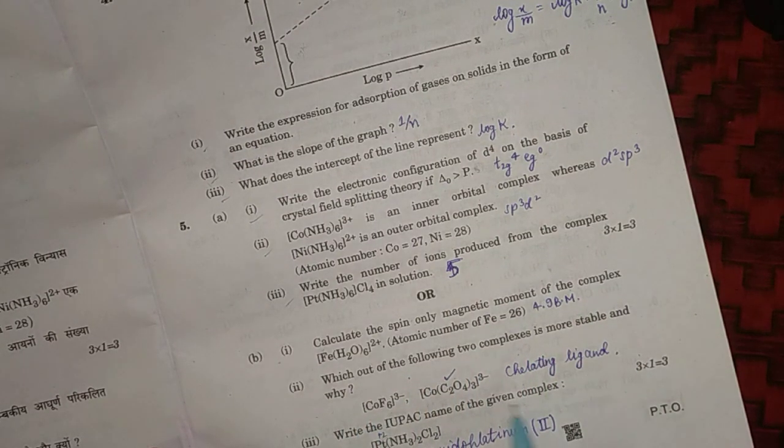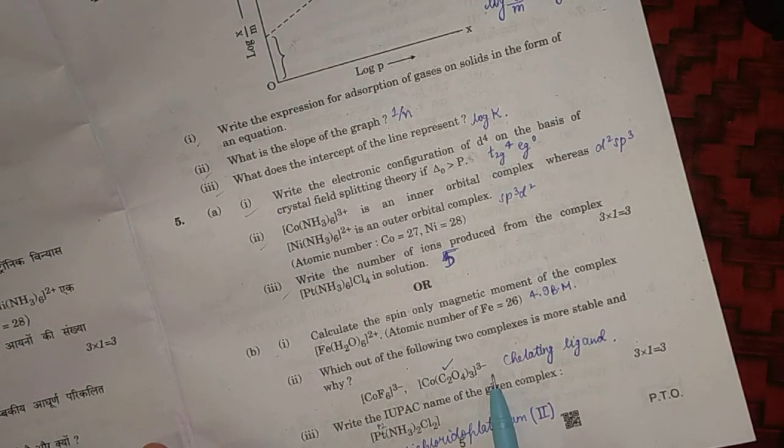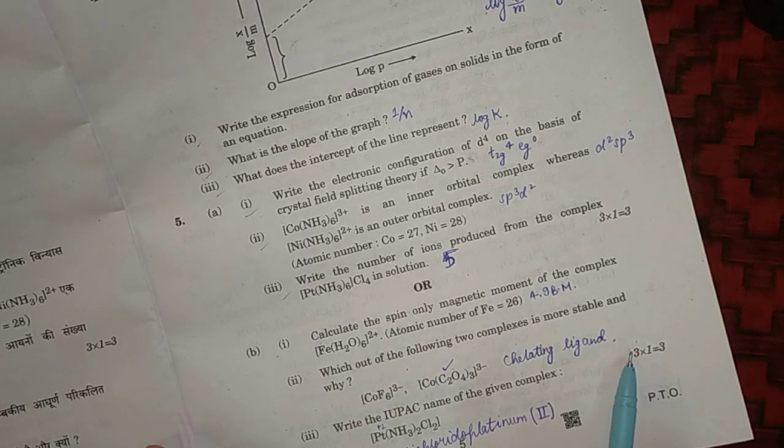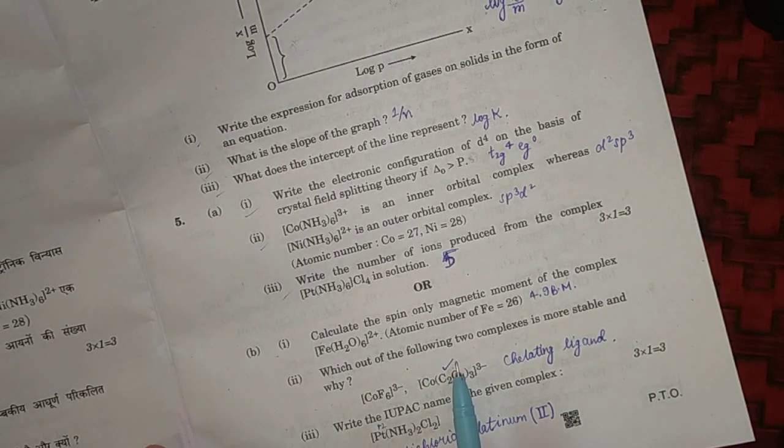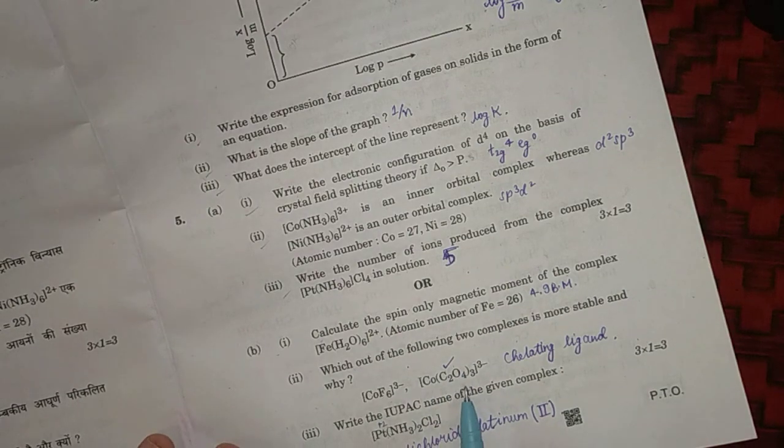Which out of the following two complexes is more stable? Here [Co(C2O4)3]3- is more stable because it is a chelating ligand. Chelating ligands are those ligands which form a ring with the central atom, and as they form five-membered ring it is more stable.